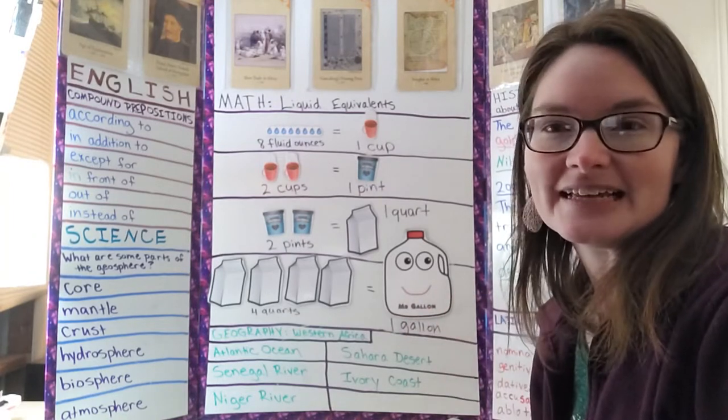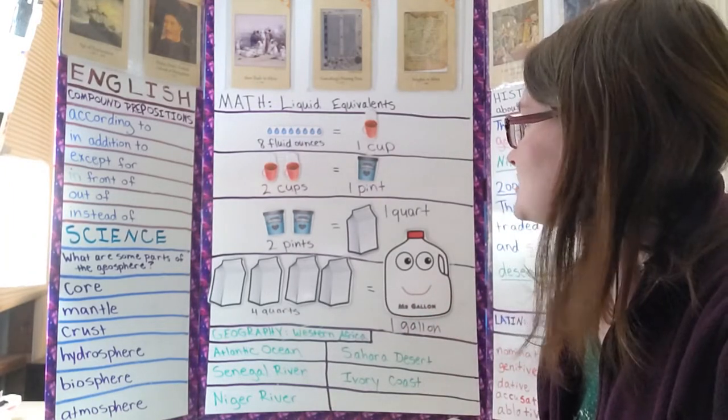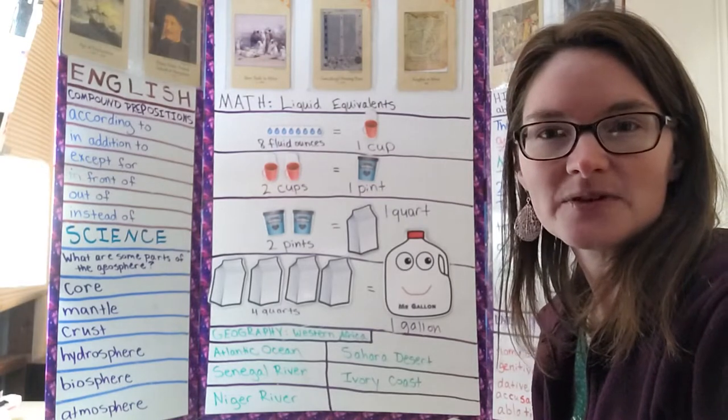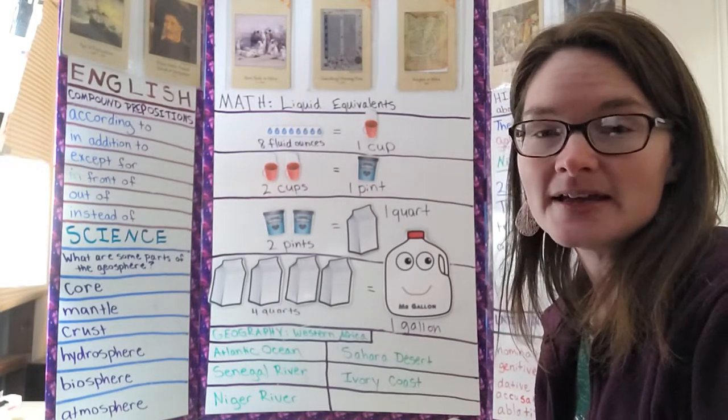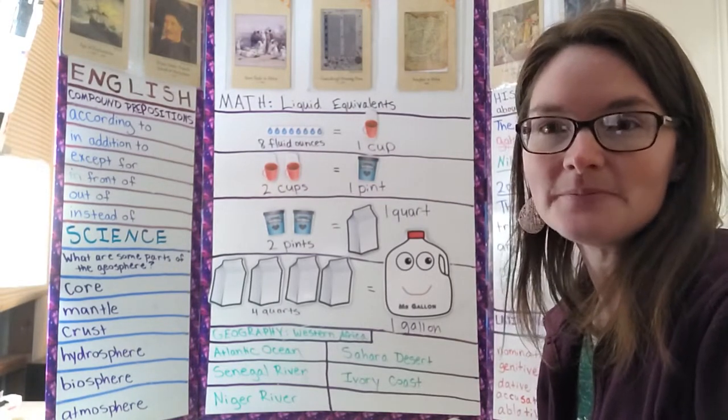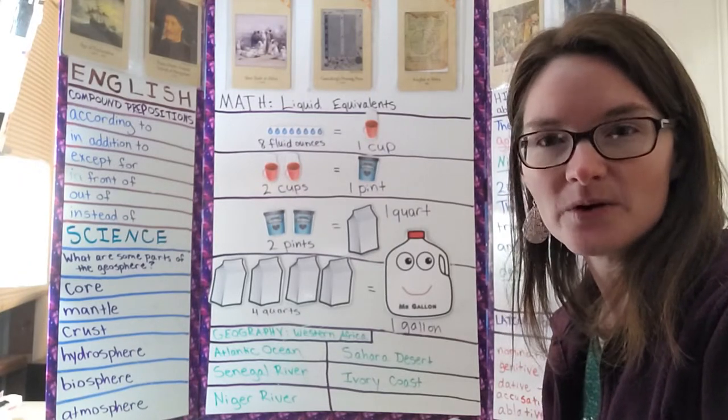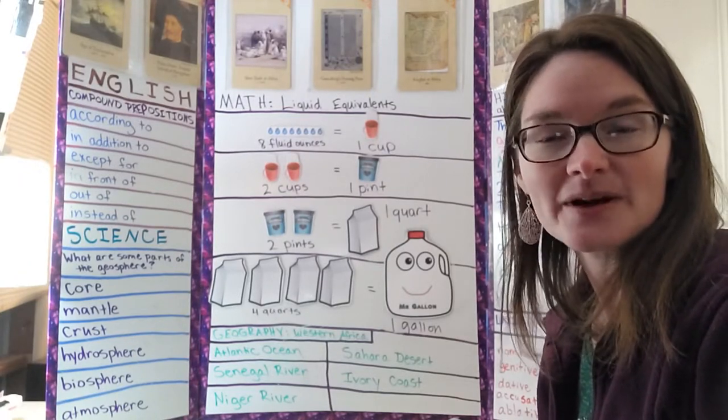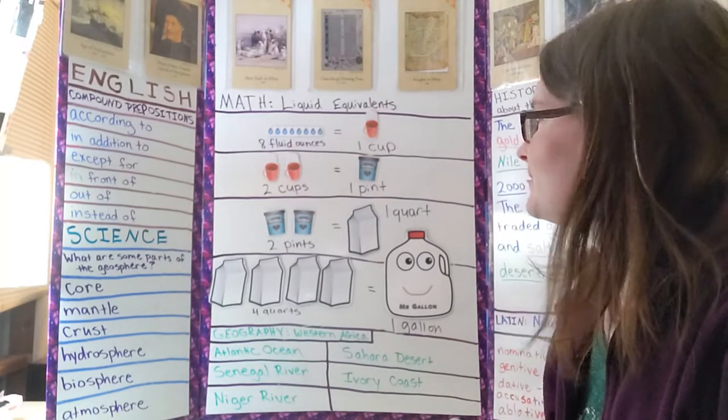So I did that again this year. We chanted it: eight fluid ounces equals one cup, two cups equals one pint, two pints equals one quart, four quarts equals one gallon. We went through that several times.